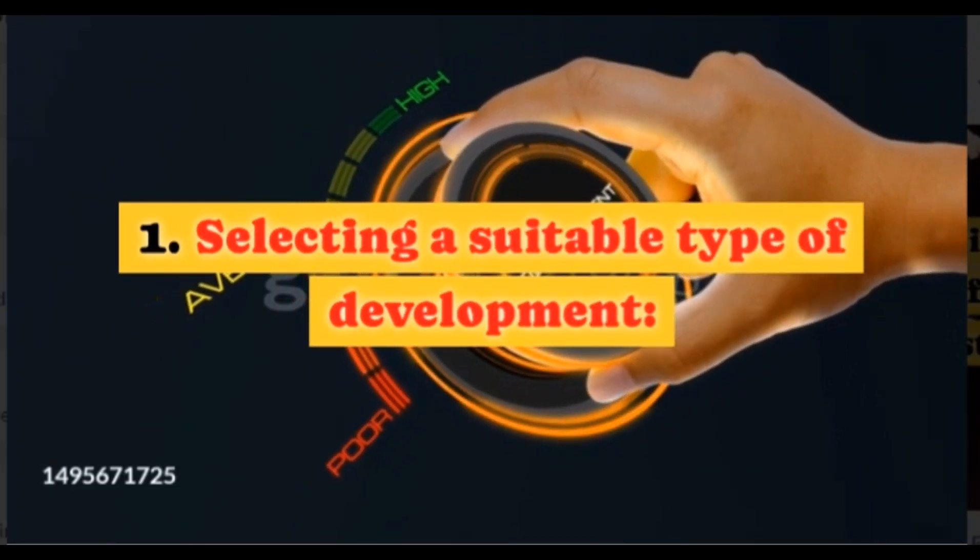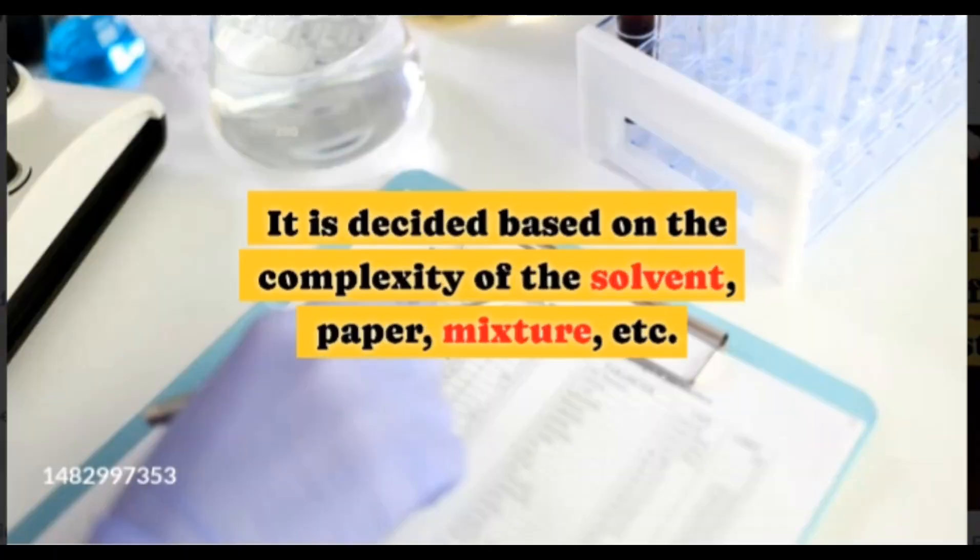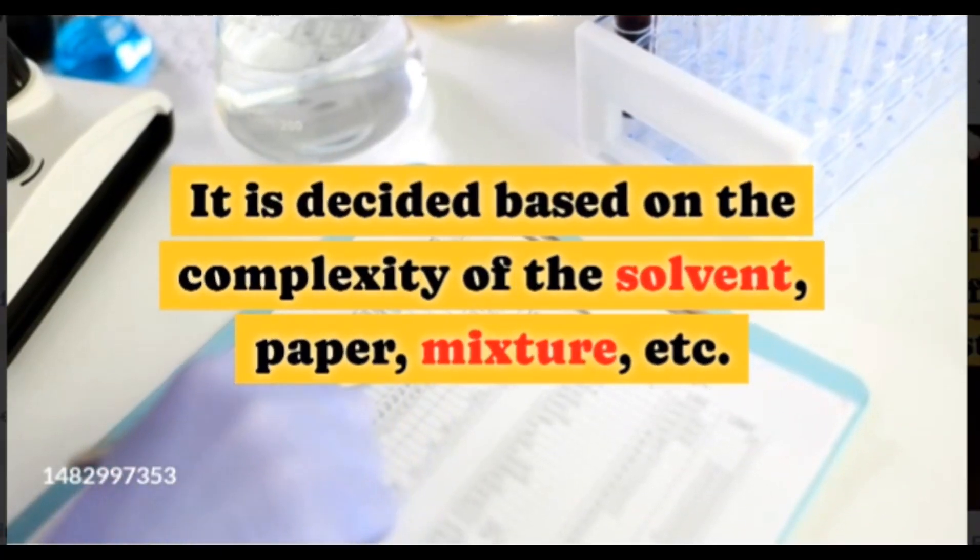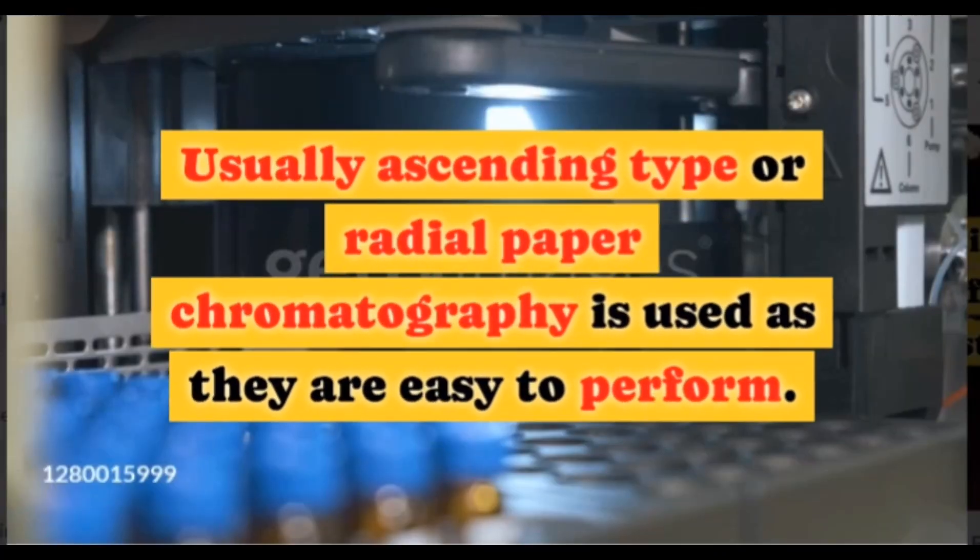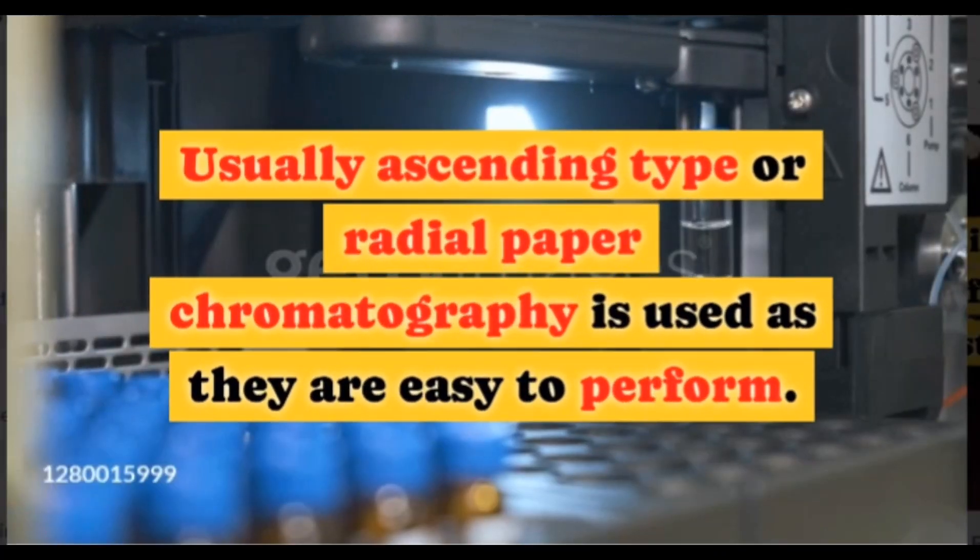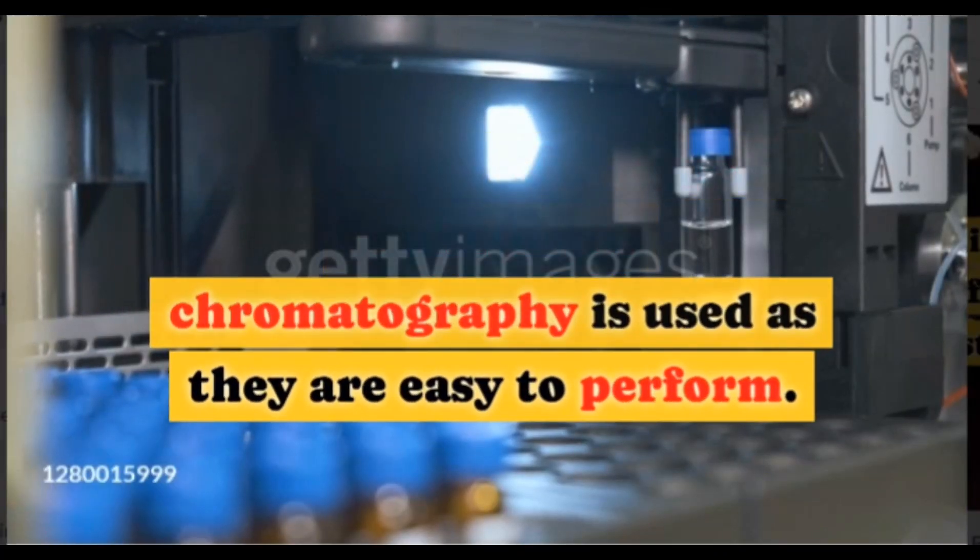Selecting a suitable type of development. It is decided based on the complexity of the solvent, paper, mixture, etc. Usually ascending type or radial paper chromatography is used as they are easy to perform.